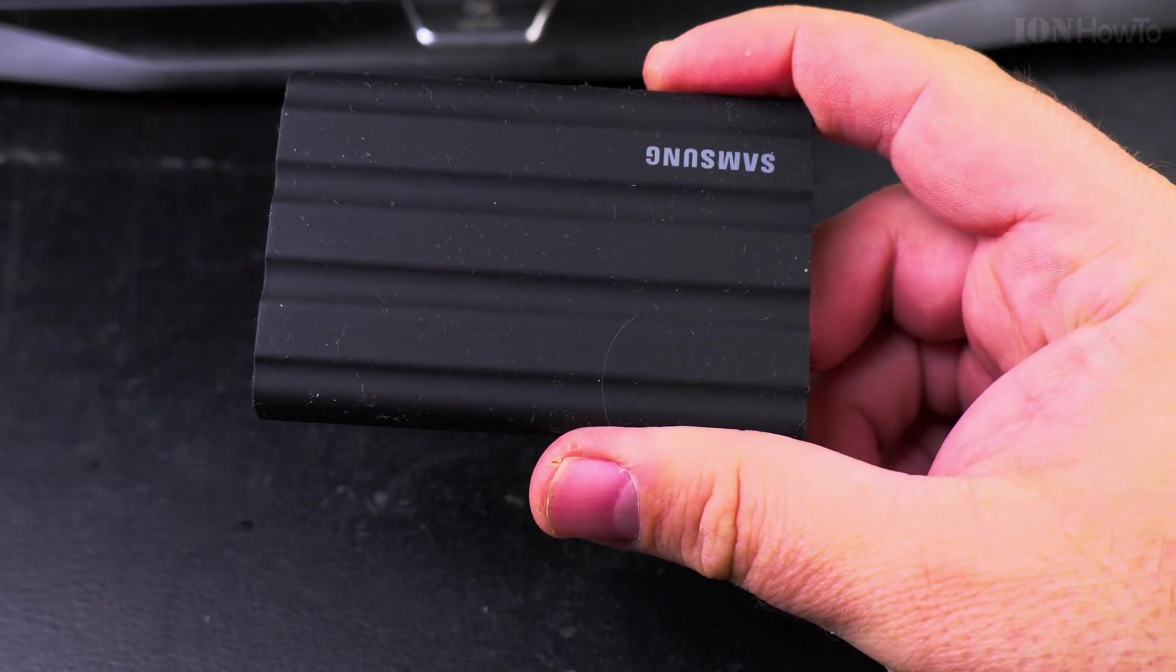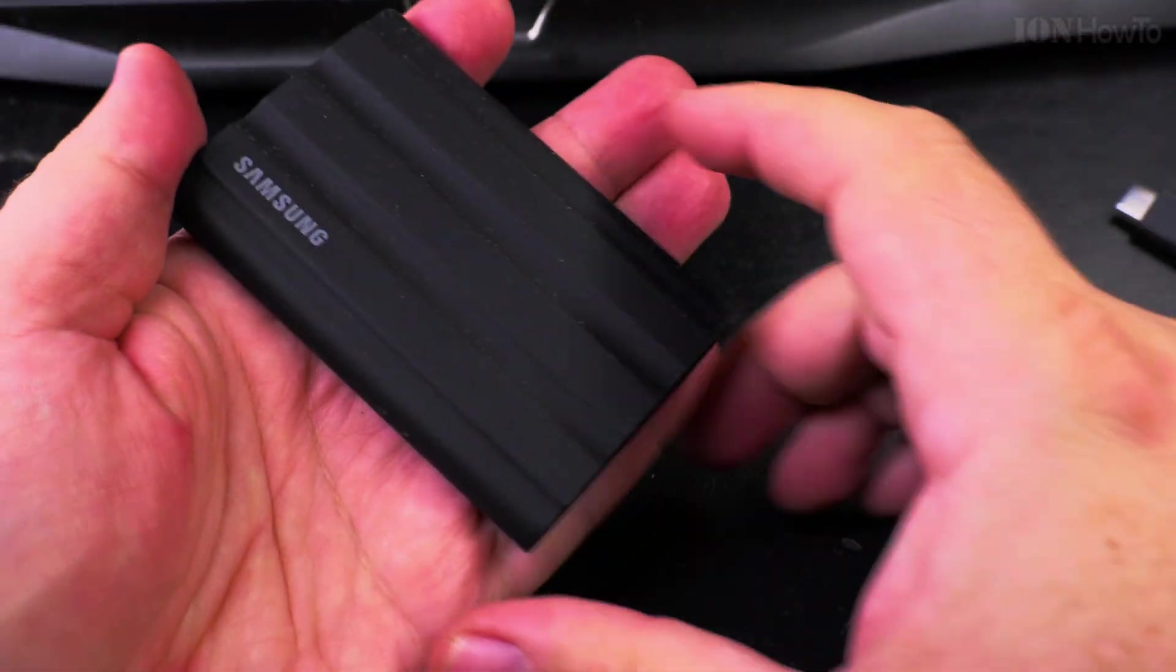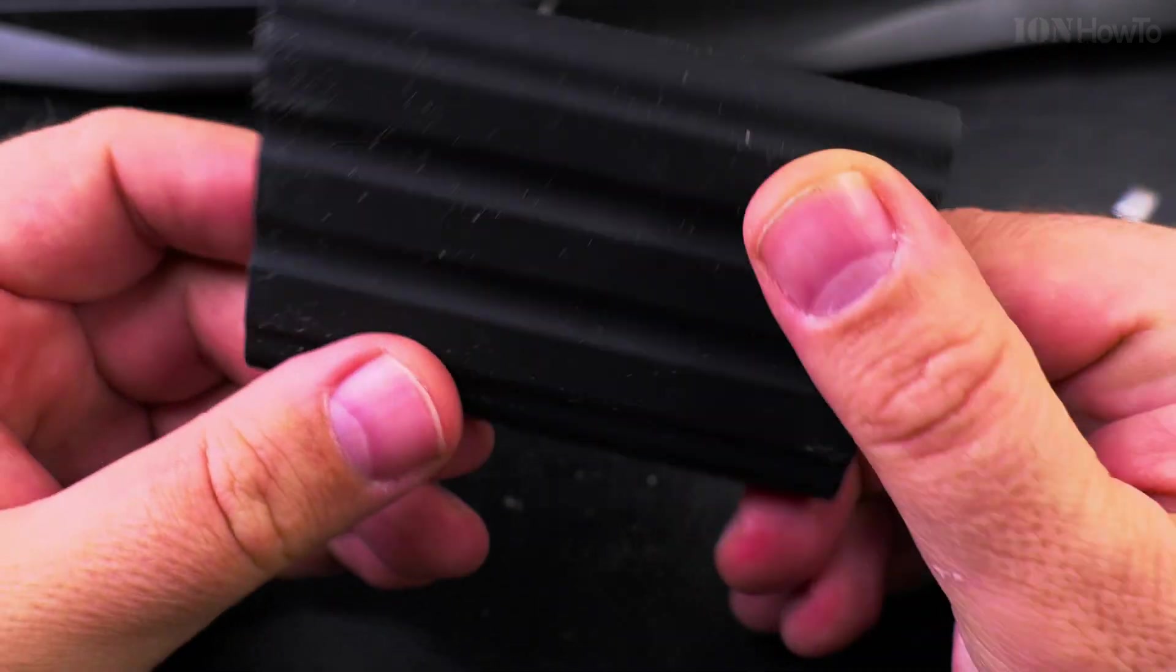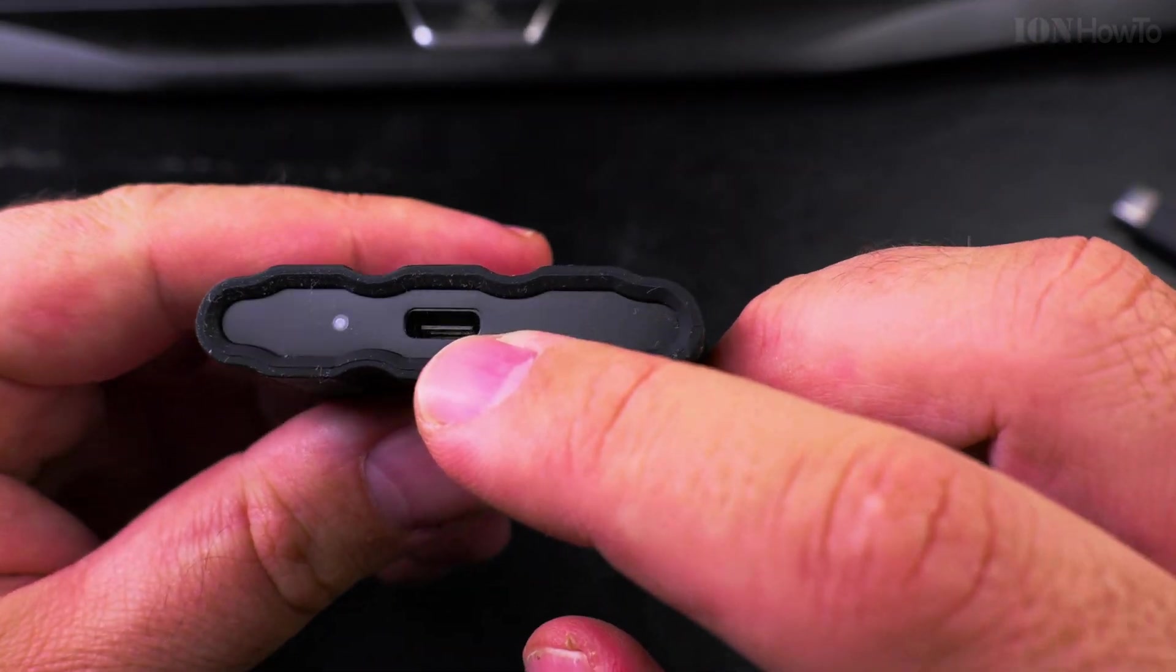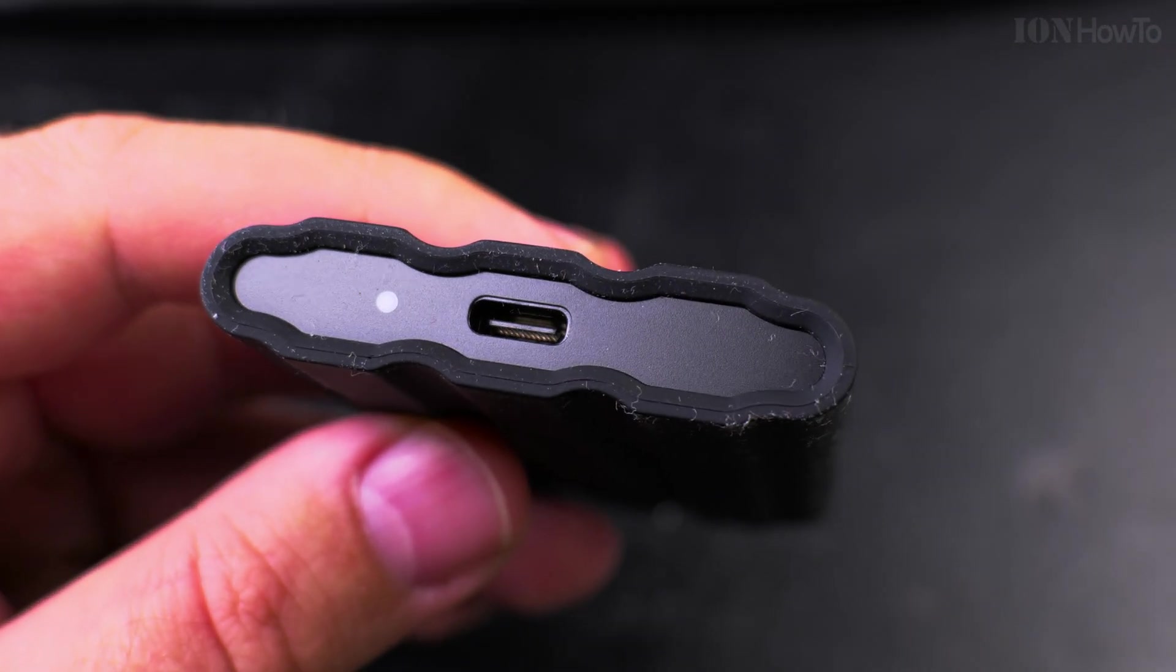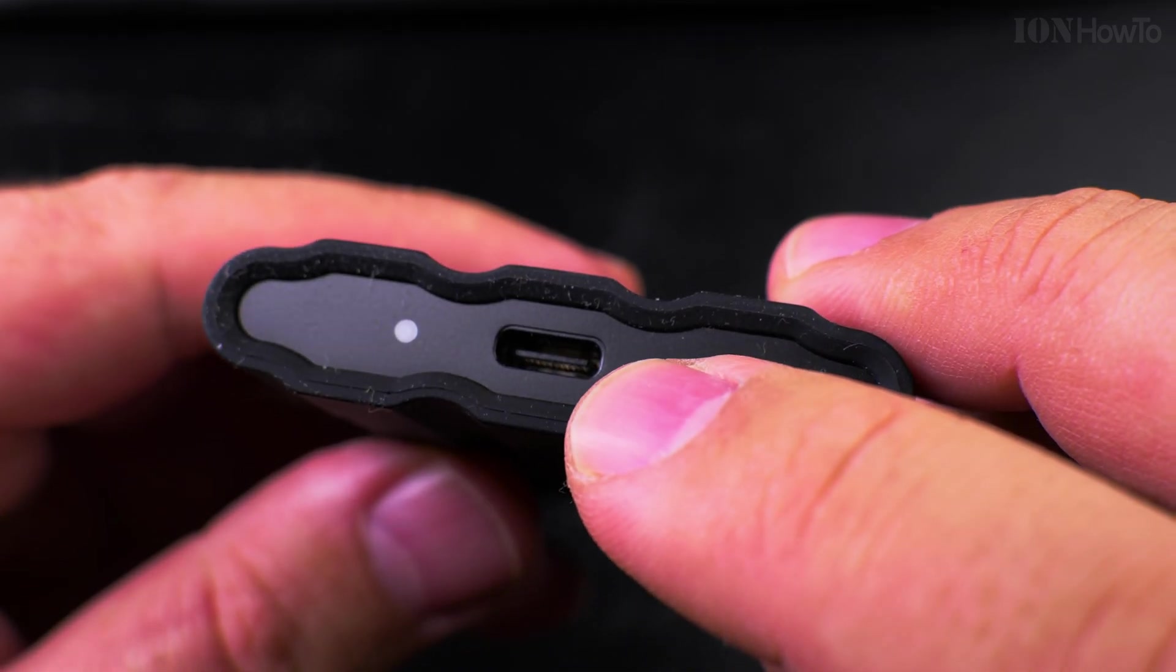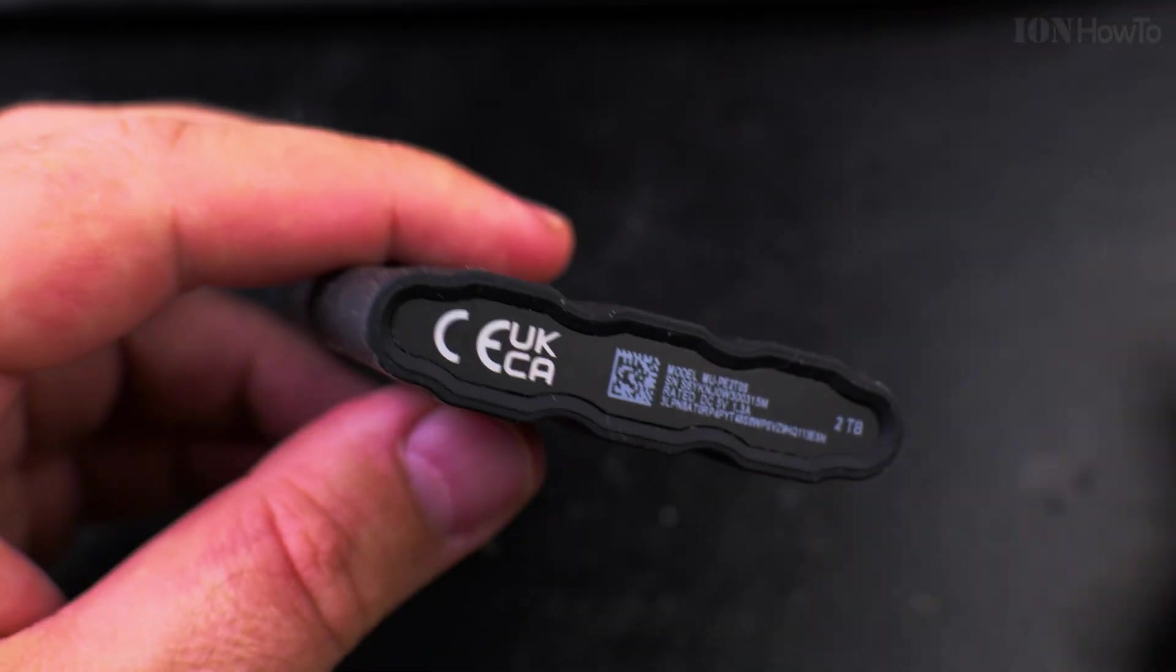Okay, this is a teardown of my Samsung T7 Shield. Trying to clean it a little bit. I spilled coffee all over it. Coffee went inside the USB port, went all around it.